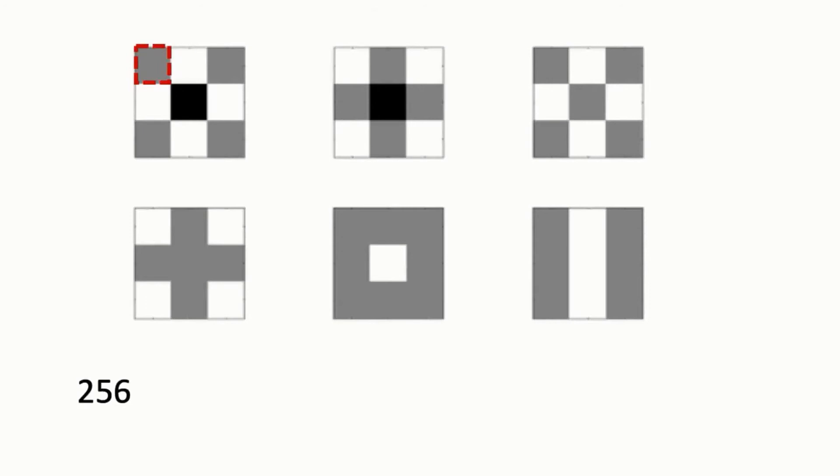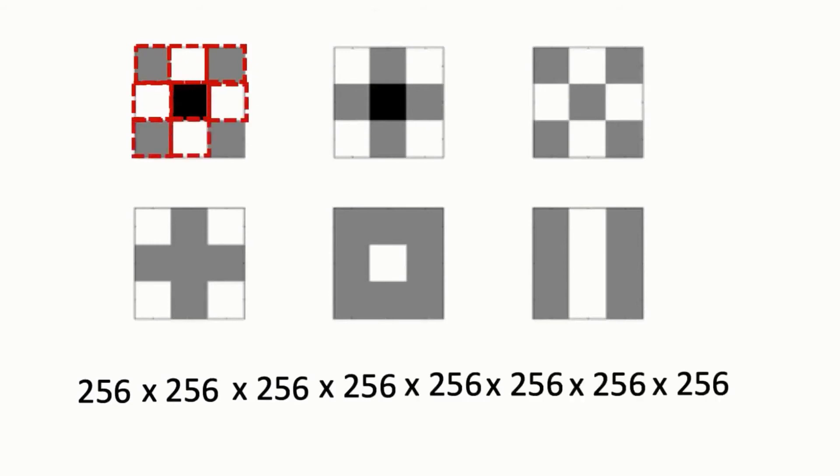To get all the possibilities for two squares, we multiply the possibility for one square times all the possibilities for the second square, which is 256 times 256. And we have to continue doing this, so we have to multiply 256 times 256 times 256, all the way up to nine times, to get all the possibilities that all nine squares can have altogether.